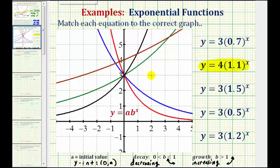Looking at our graphs, notice that there's only one function that has a y-intercept of positive four, and notice that it's also exponential growth because it's going uphill from left to right. So the second equation would produce the brown graph.